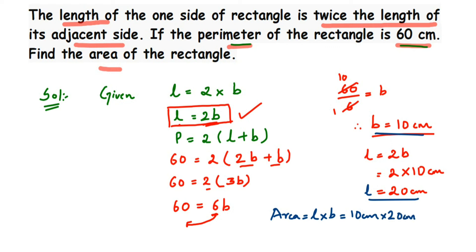So 10 × 20 = 200, and we get the area as 200 centimeters squared — don't forget the square unit. We found the length, breadth, and then the area of the rectangle. I hope this question is clear. If you have any further questions or doubts, you can drop a comment below. Thank you so much for watching.